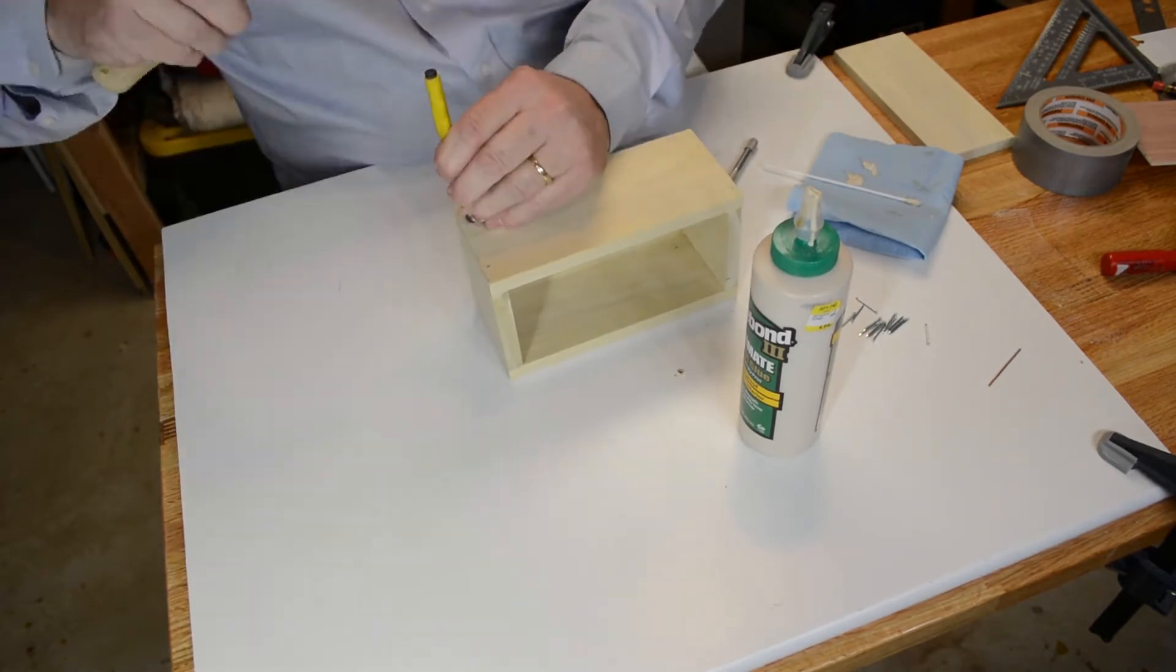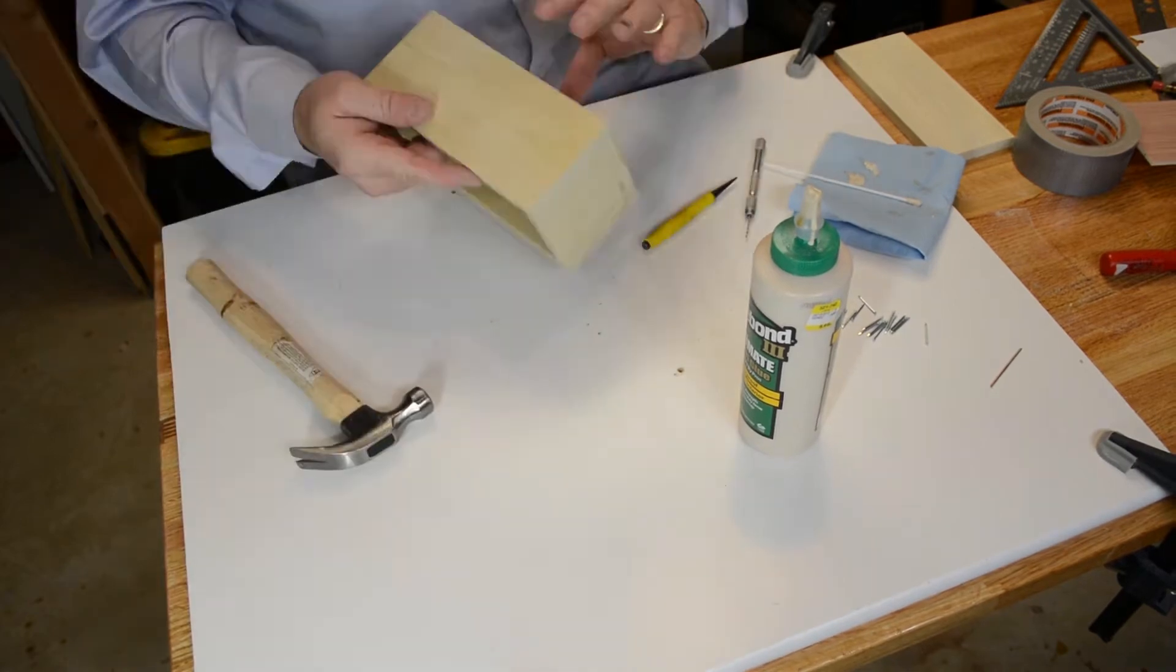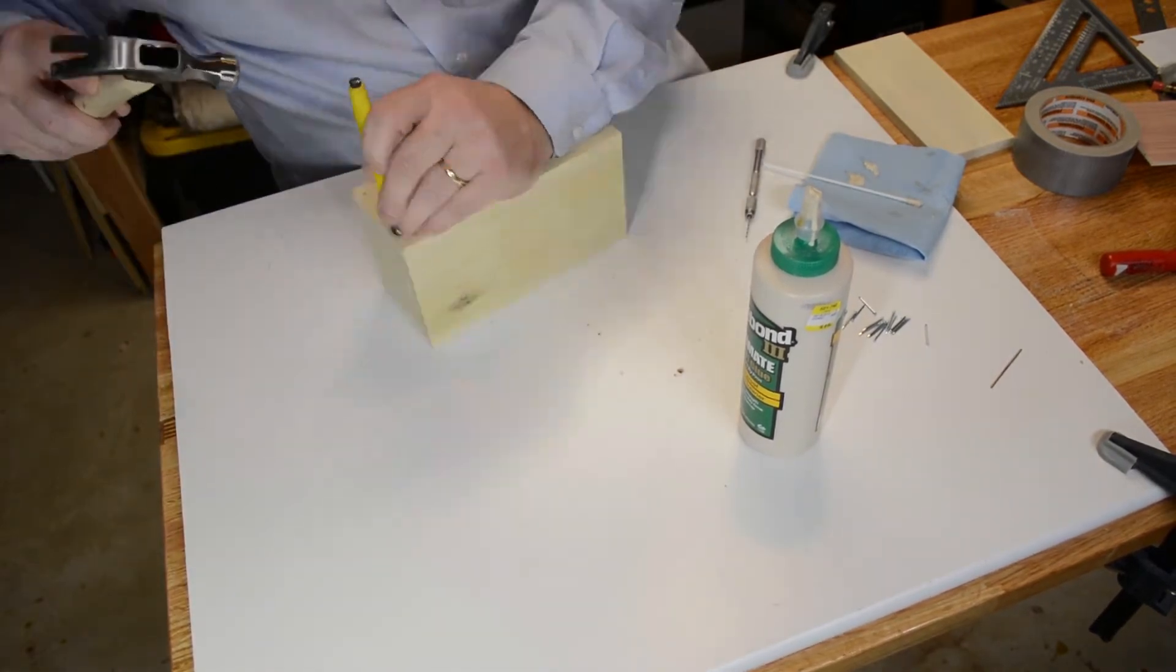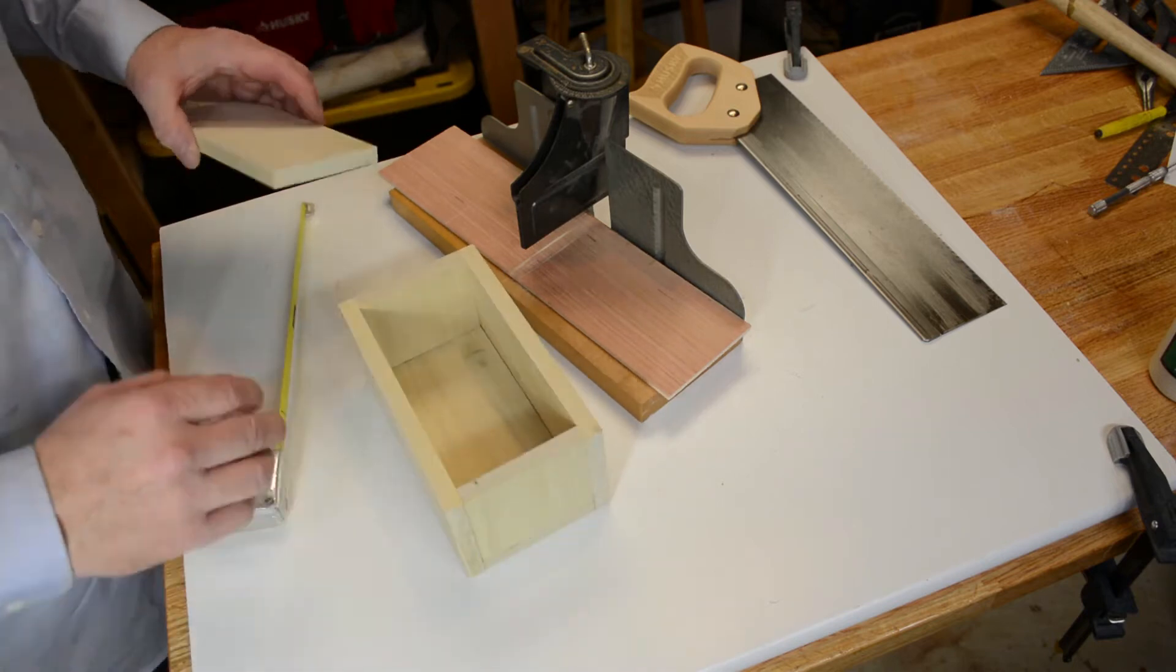So now I'm just using the nail set to punch those nails down a little bit below the surface of the wood. You don't want any of those nails sticking out. So they're all set in there.